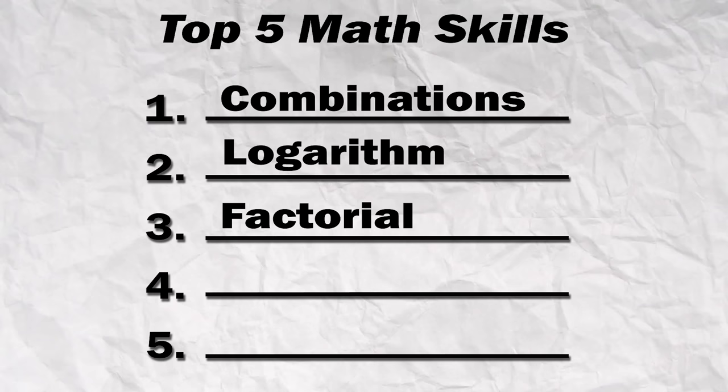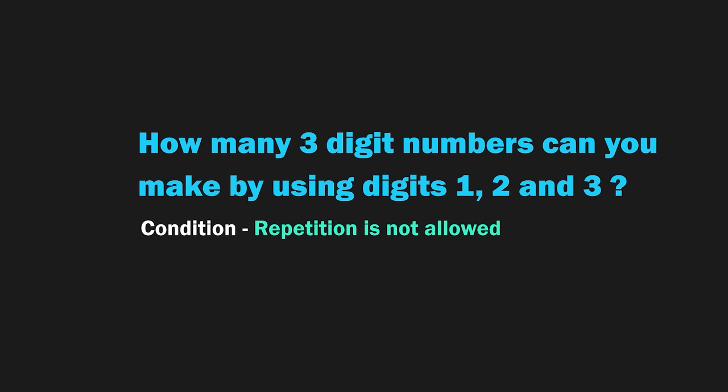Now that we have that out of the way, let's talk about the fourth concept which is exponentials. And for that, we need to go back to the 3-digit numbers example. Let me change the question a little bit for you. How many 3-digit numbers can you make using the digits 1, 2, and 3 if you can use a digit more than once? I would love to see your answer in the comments.